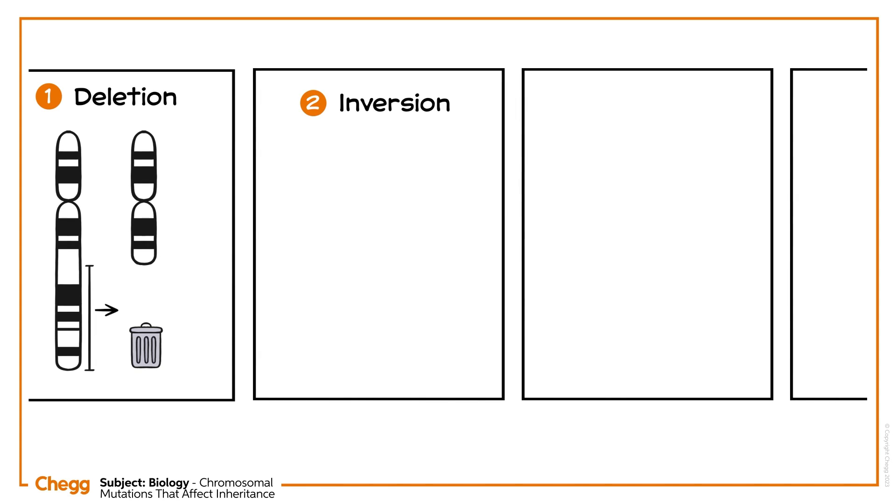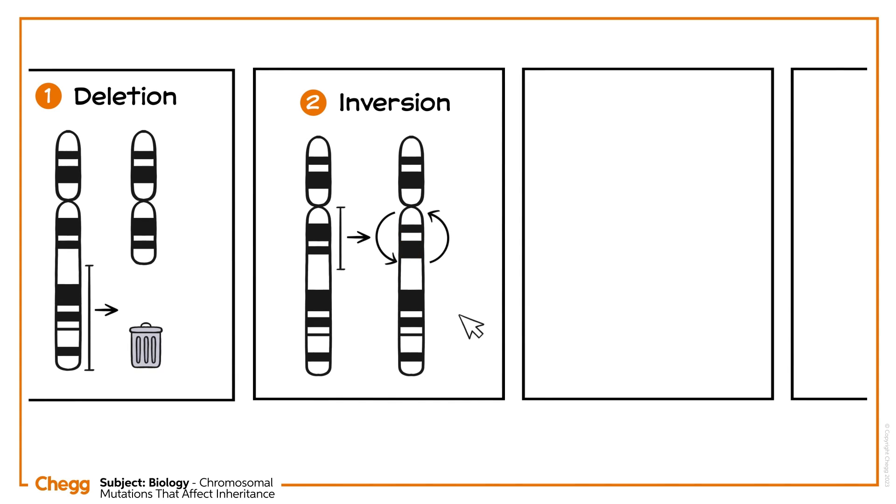Inversion is a type of mutation in which the genetic material gets flipped in the opposite direction. The inversion mutation is of two types, pericentric and paracentric.